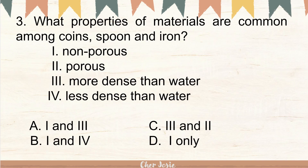Number three: what properties of materials are common among coins, spoon, and iron? 1. Non-porous. 2. Porous. 3. More dense than water. 4. Less dense than water. Is it A. Non-porous and more dense than water? B. Non-porous and less dense than water? C. More dense than water and porous? Or D. Non-porous only? The correct answer is letter A. Non-porous and more dense than water.